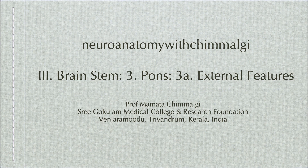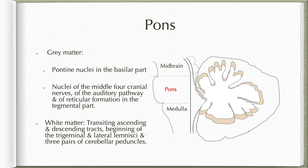Pons develops from the metencephalon part of the hindbrain vesicle. In this video, let us begin with the external features of the pons. The gray matter of the pons includes pontine nuclei situated within the basilar part, nuclei of the middle four cranial nerves, nuclei of the auditory pathways, and nuclei of the reticular formation in the tegmental part. White matter includes various ascending and descending tracts, the trigeminal and lateral lemnisci, and the three cerebellar peduncles.